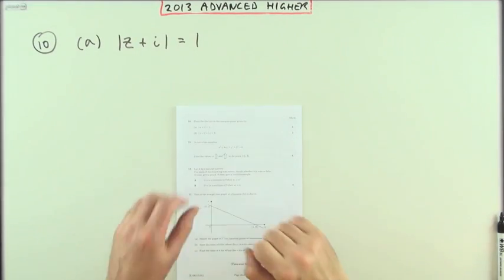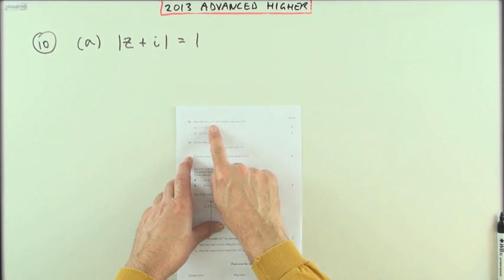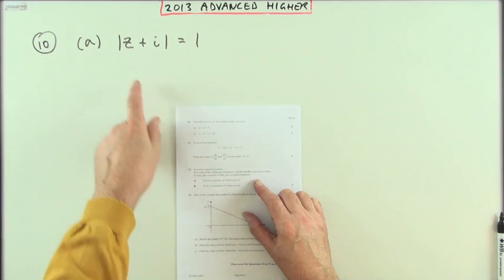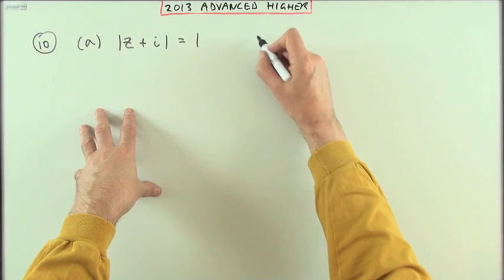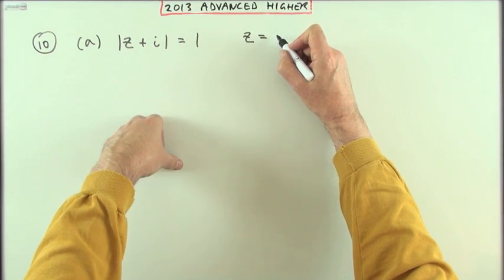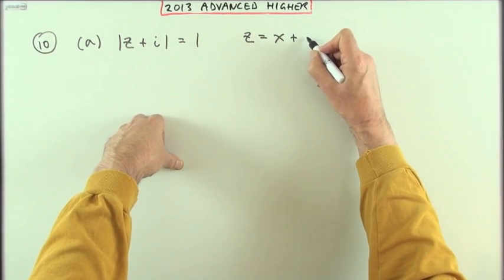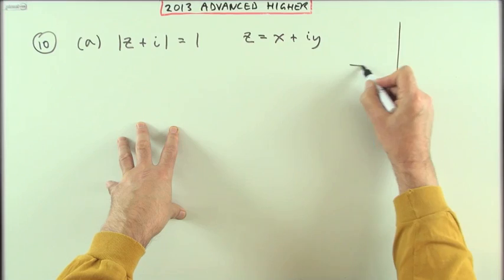Number 10 from the 2013 Advanced Higher Maths complex numbers: describe the loci in the complex plane given by this equation. Well, first of all, I'll put this into a coordinate form. This complex number can be written as x plus iy and shown in a diagram.